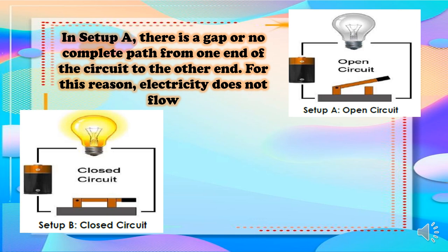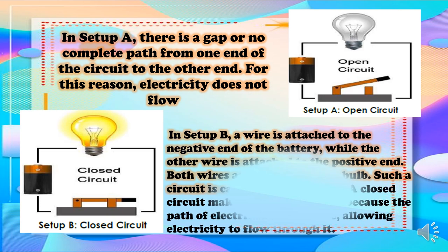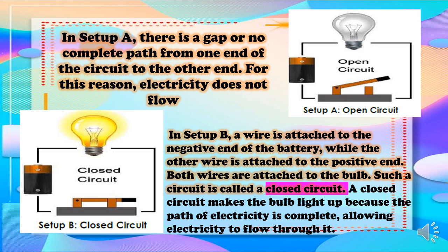And this is setup B, closed circuit. In setup B, a wire is attached to the negative end of the battery, while the other wire is attached to the positive end. Both wires are attached to the bulb.